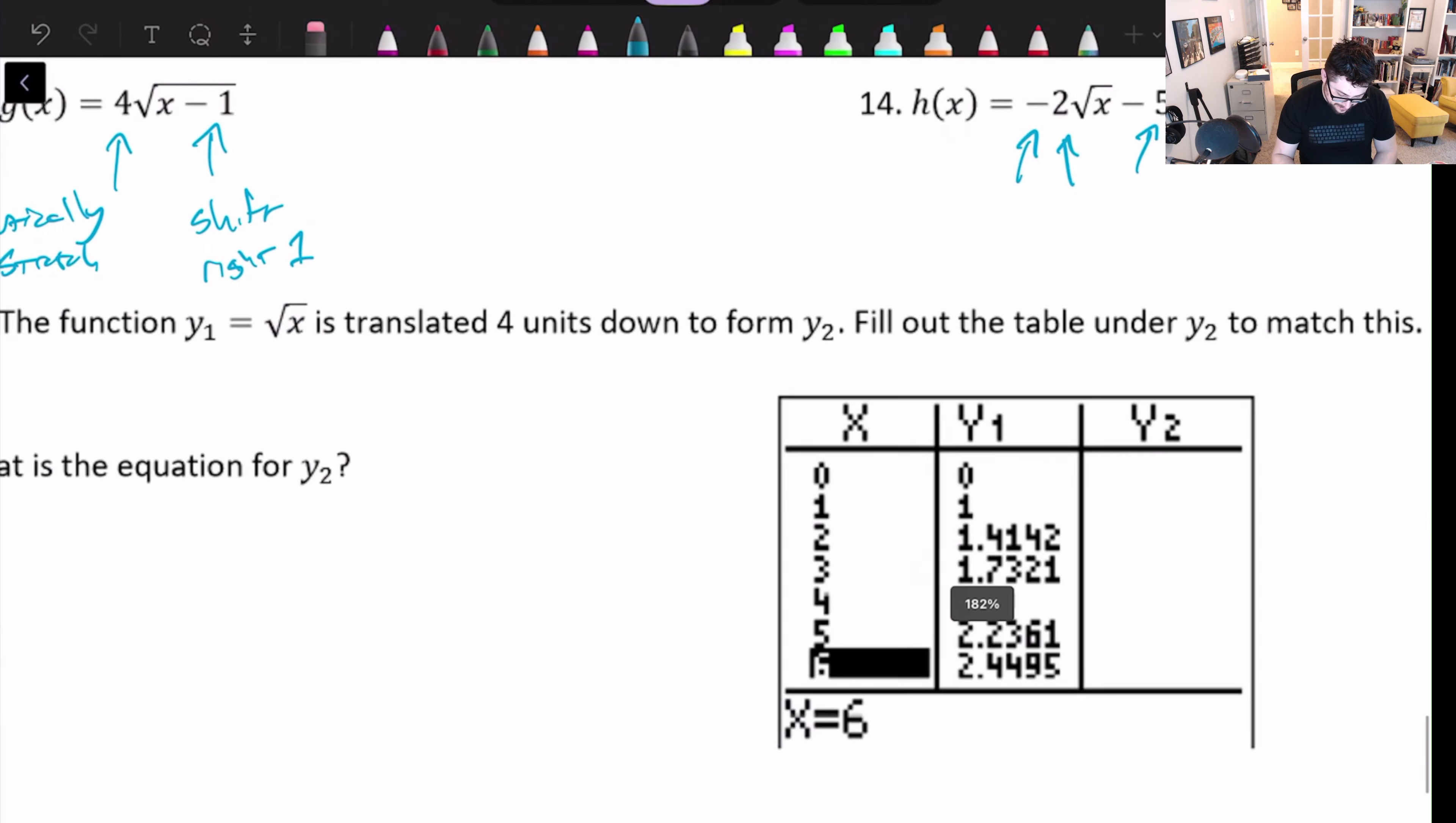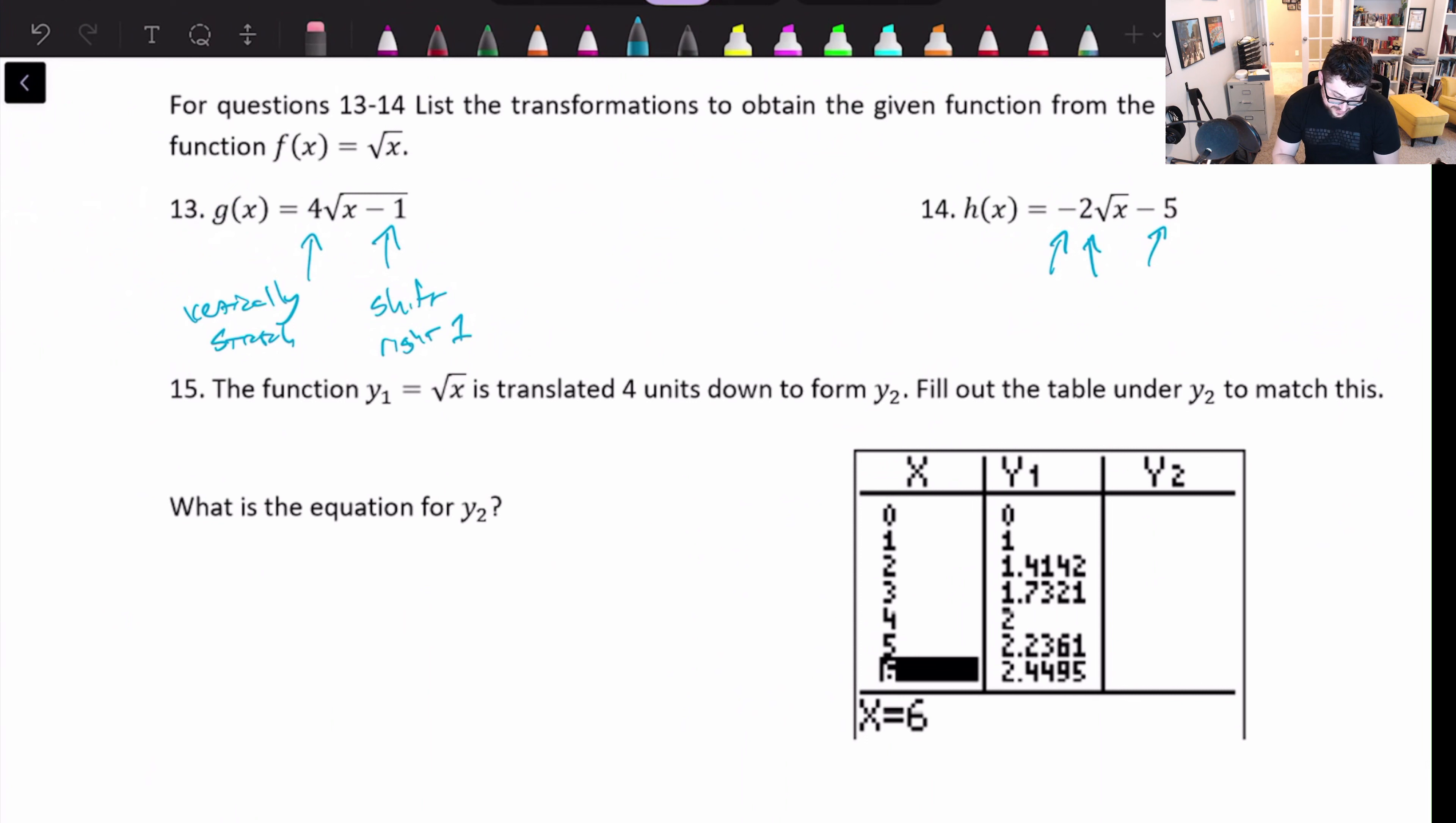And the last little bit, this function is translated four units down to fill out y2, fill out the table, match this. Well, if we are going down 4 units, I would expect our y values to be 4 units lower. I would also expect our function to be subtracting 4 on the end. So, we can just take our original function. I don't need y1 anymore. Take our original function and then just put a minus 4 on there. And that's how we could get what's in this table. We can also just use common sense. 0 minus 4 would give me negative 4. 1 minus 4 would give me negative 3. 2 minus 4 would give me negative 2. One second. And we're back. Okay. So, anyway, after all that, we should have a reasonable idea for the table.